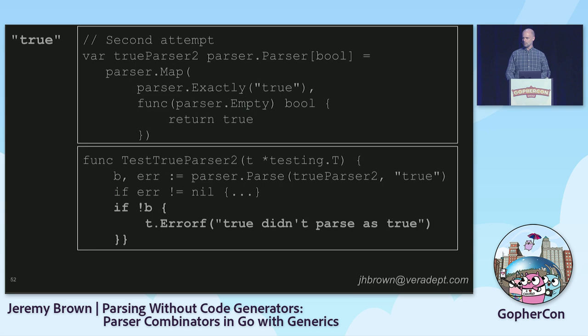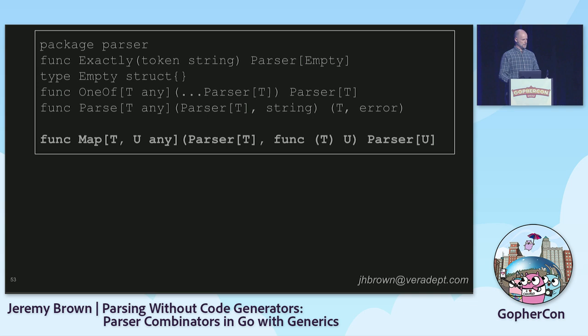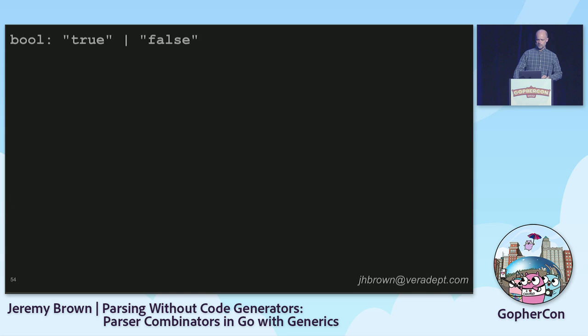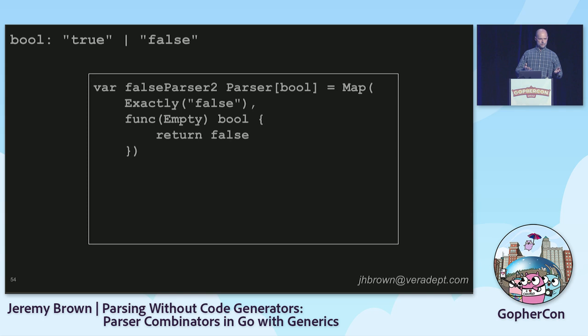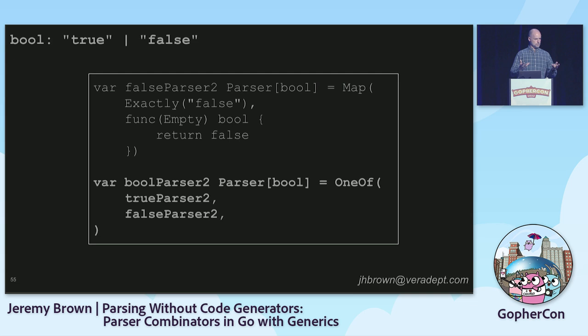We add `map` to the API. It's parameterized on two types — it takes a parser of one type, a function that maps that type to another, and returns a parser of that output type. Here's the rest of parsing Boolean values: we do a false parser with exactly the same trick, returning `false` in our mapping function. Then the Boolean parser just calls `oneOf` with our new Boolean-typed parsers. This works.